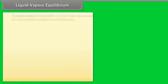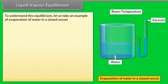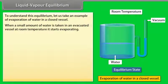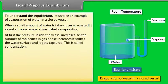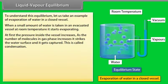Liquid-Vapour Equilibrium. To understand this equilibrium, let us take the example of evaporation of water in a closed vessel. When a small amount of water is taken in an evacuated vessel at room temperature, it starts evaporating. The pressure inside the vessel increases. As the number of molecules in the gas phase increases, they strike the water surface and get captured — this is called condensation.